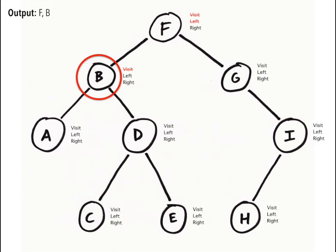Reaching B, we print its value. Again, we move to the left subtree. After printing A, we realize it doesn't have children, so we return to B.